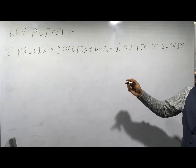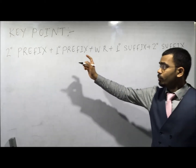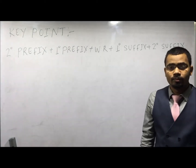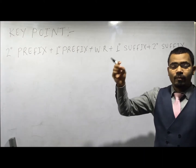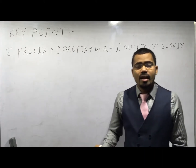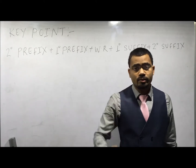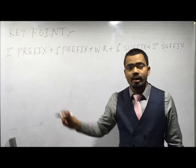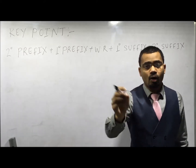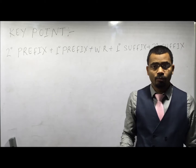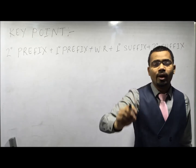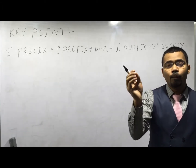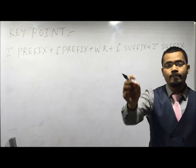The five parts are: secondary prefix, primary prefix, word root, primary suffix, and secondary suffix. The secondary prefix is the name of the substituent. Substituents are written in alphabetical order with their locant number, that is their position in the parent chain.